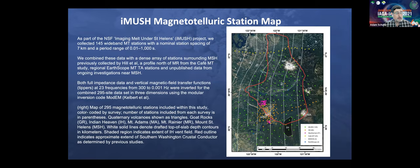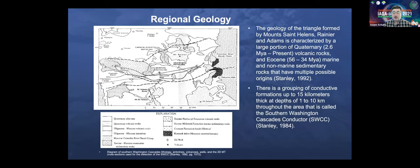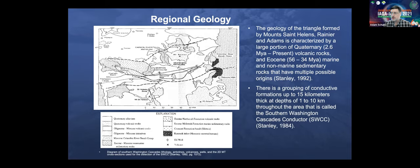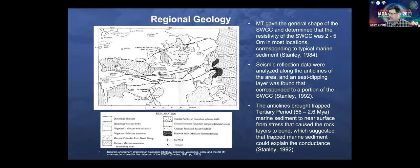Looking at this grouping of more conductive formations — the Southern Washington Cascades conductor — by the early 1990s we knew it was located at depths as shallow as one kilometer and as deep as around 10 kilometers. MT gave us the general shape of the anomaly and bounds on its resistivity — around two to five ohm meters in most locations, consistent with marine sediments. There was also seismic reflection data along anticlines, and an east-dipping layer corresponding to part of the SWCC. These were understood to be largely trapped Tertiary marine sediments brought to the surface by subsequent tectonics. Well logs revealed Eocene marine sandstone and shale at depths coincident with this conductive anomaly.